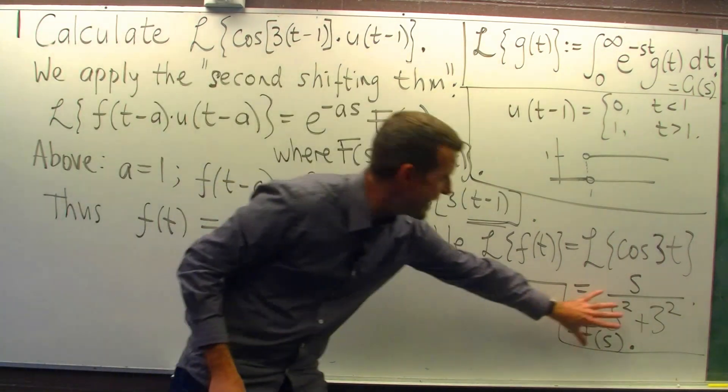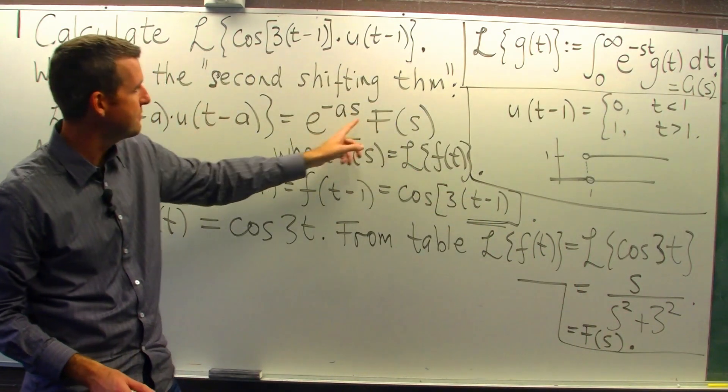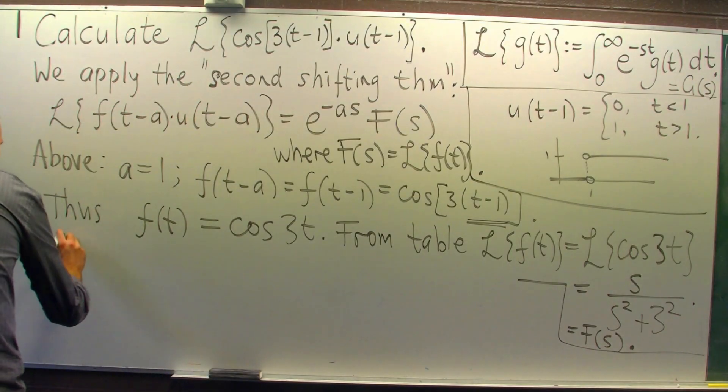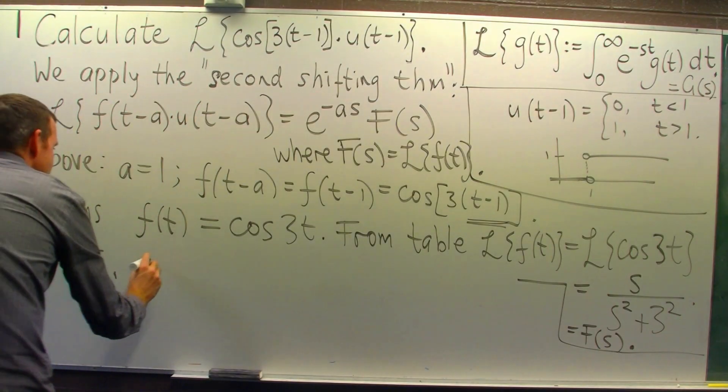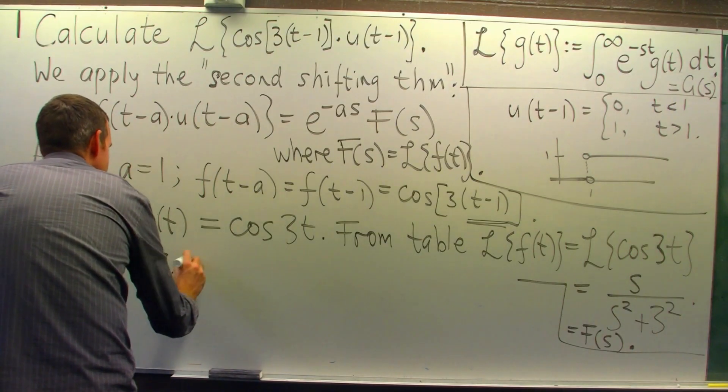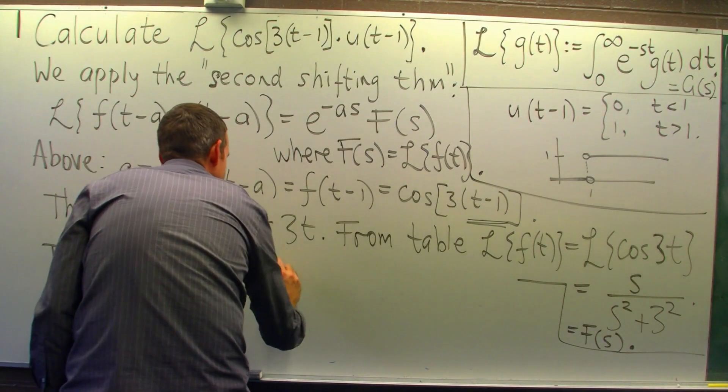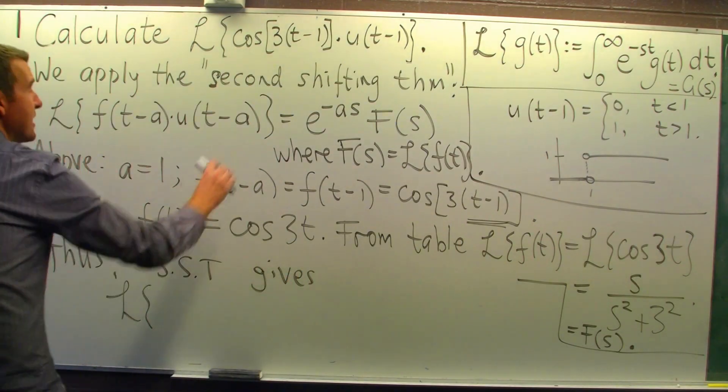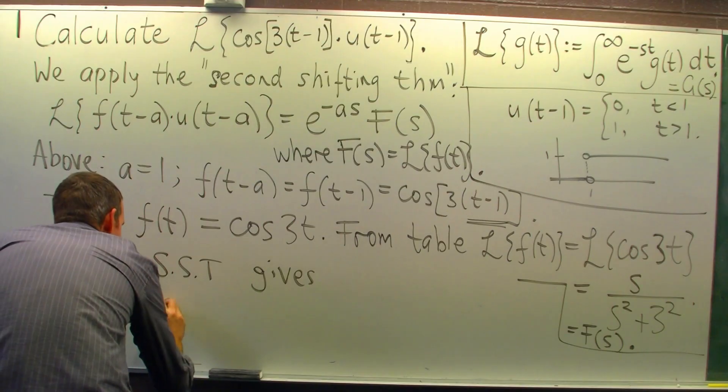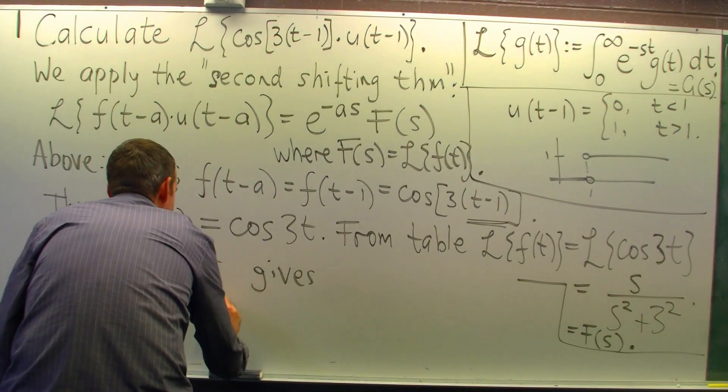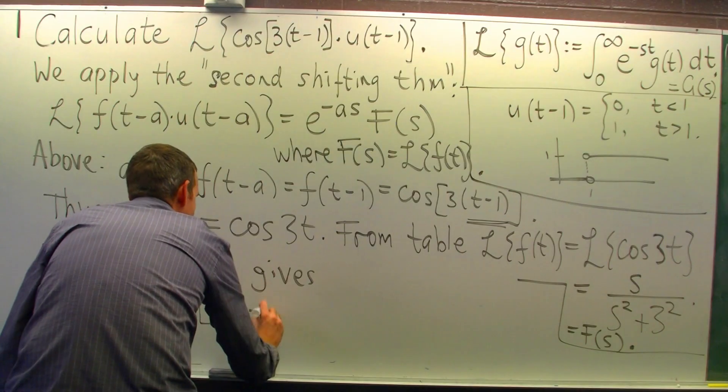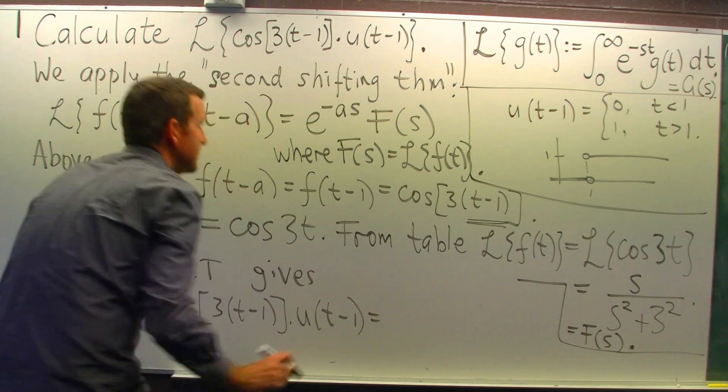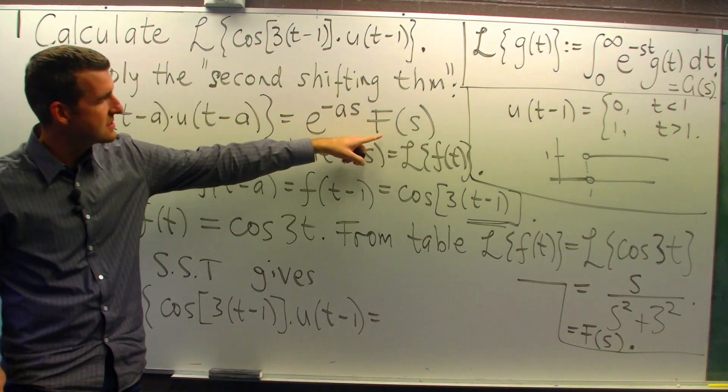So we recognize that that's actually the thing we're looking for. Alright? So now we take this, put it in here and multiply by e to the minus a s. So the second shifting theorem gives the following.